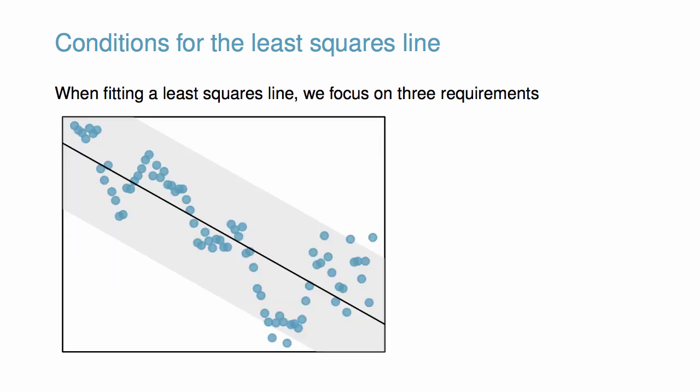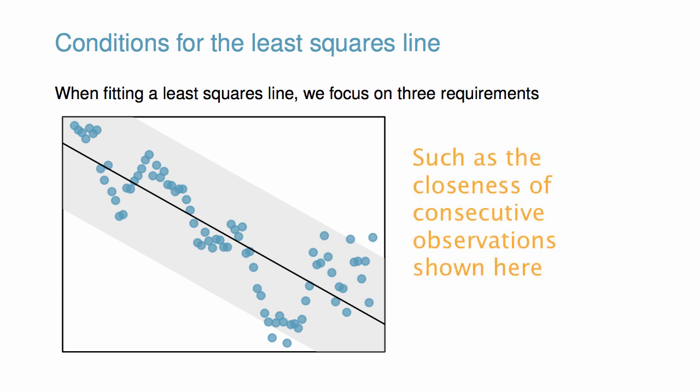Lastly, we should also exercise caution whenever we notice structures in the data that are not accounted for by the least squares line.